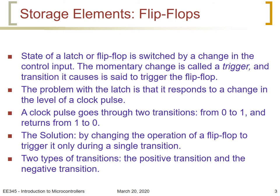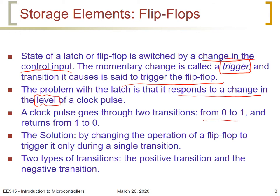The state of a flip-flop is switched by a change in the control input, which means changing the enable or the clock. The momentary change is called a trigger, which causes the latch to change from one state to the other. The transition in the enable causes the triggering of the flip-flop. The problem with the latch is its response to a change in the level of the clock pulse. The solution is to change the operation so the flip-flop triggers only during a transition of the clock pulse.